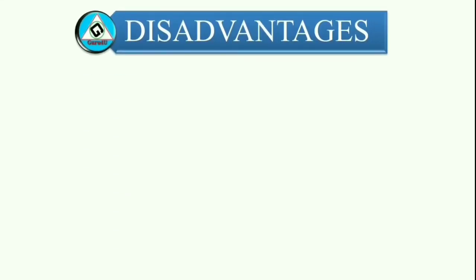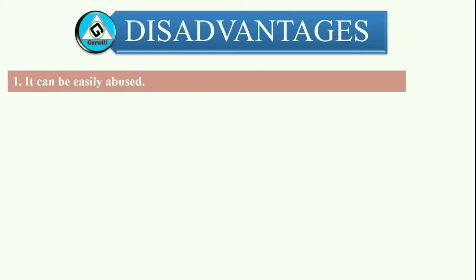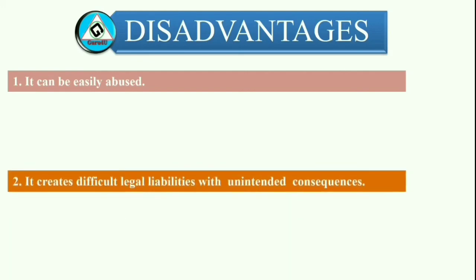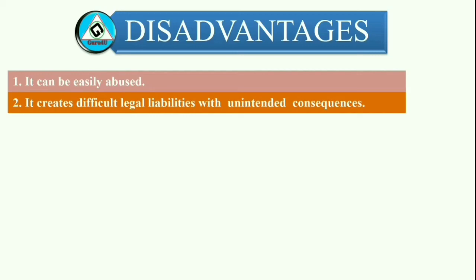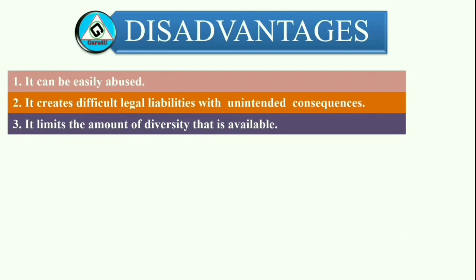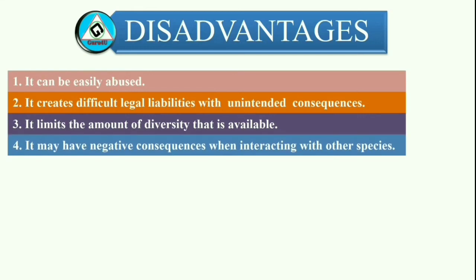Disadvantages of genetic engineering: It is a technology that can be easily abused. We currently have laws and treaties in place to prevent genetic engineering abuse, but that doesn't mean it won't ever happen. The reality of genetic engineering is that DNA insertion could be used to create severe problems for certain groups of people. It creates difficult legal liabilities with unintended consequences. Crops which have been genetically engineered have had their seeds spread to other fields, causing unintended growth where they land. It limits the amount of diversity that is available. Although genetic engineering seems like it would increase diversity, it actually decreases it, because one preferred product becomes the focus of the industry when it performs well. It may have negative consequences when interacting with other species. Over time, the species with genetic engineering tends to be the dominant one, removing traits from domestic species over time.